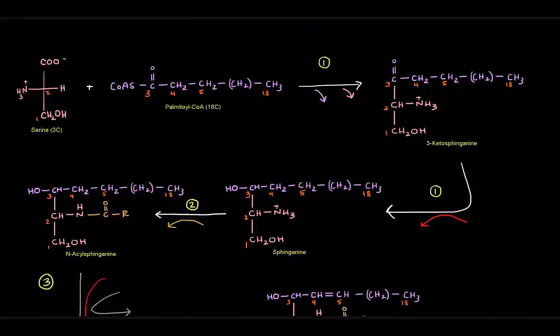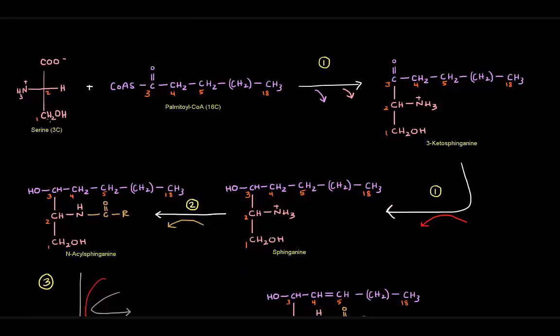First up, we've got serine here, the amino acid, and we have palmitoyl-CoA, the activated fatty acyl-CoA. These two are going to come together to form the sphingosine backbone. Only two of the three carbons in serine are actually going to be part of the backbone. It's this first carbon labeled carbon number one here, and carbon number two right above it, the alpha carbon.